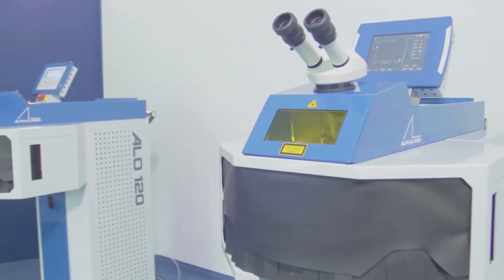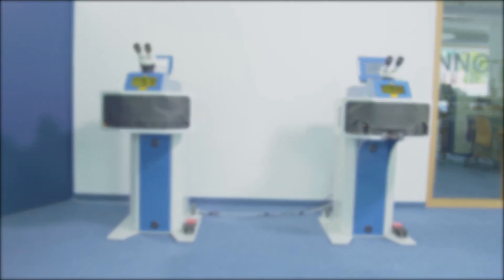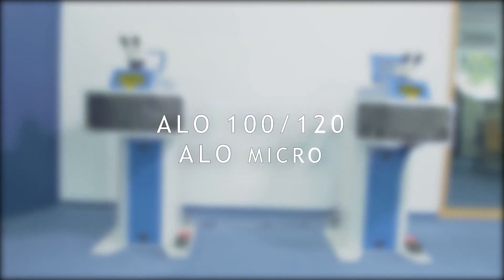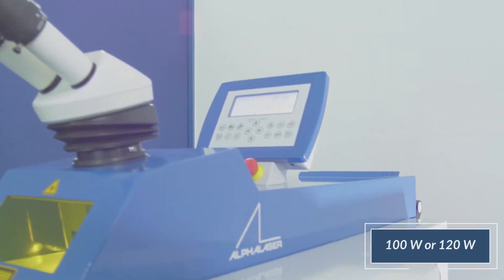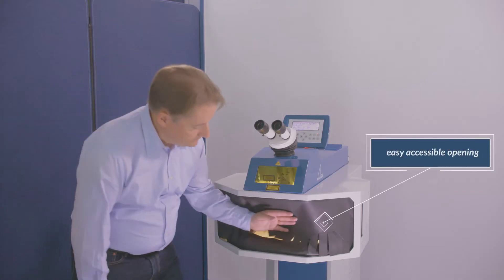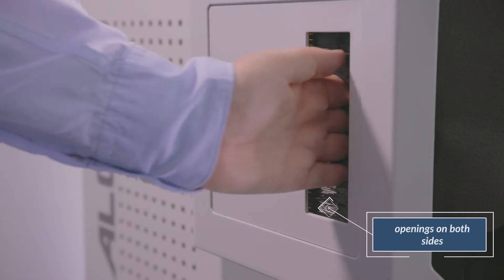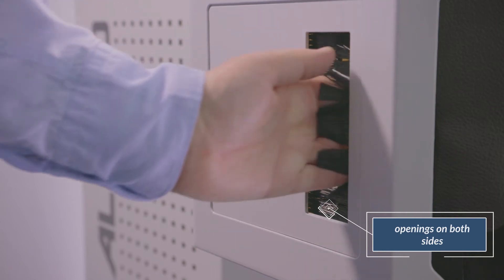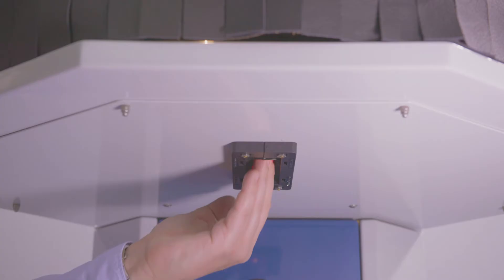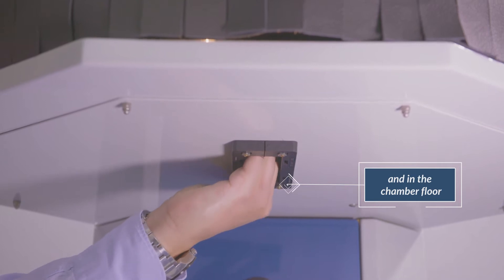Alpha Laser introduces the new manual welding lasers of the ALO series. The ALO is available with 100 or 120 watt average laser power and offers a large and easily accessible opening which is laser-safe, secured by a three-layer leather curtain. To weld long components, you find openings secured by brushes placed on both sides and in the chamber floor.